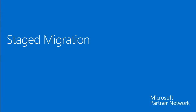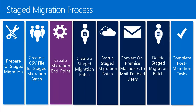Last but not least, let's talk about stage migration, which is actually a mix of IMAP and cutover migration. In the overall stage migration process, we start with preparation, then create a migration endpoint, followed by dark blue boxes marking migration batches. You have the possibility to create multiple batches, so you can move users in groups to the cloud rather than all at once.